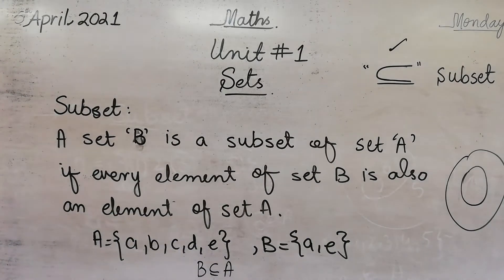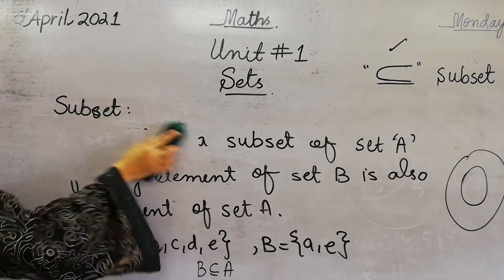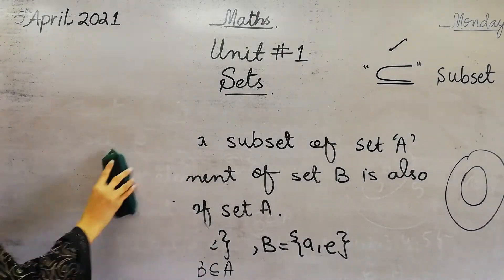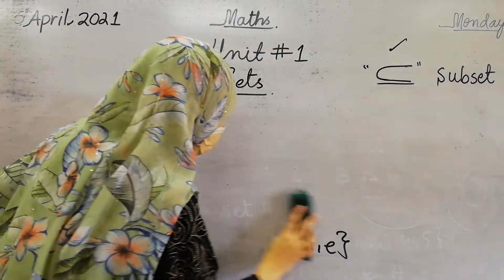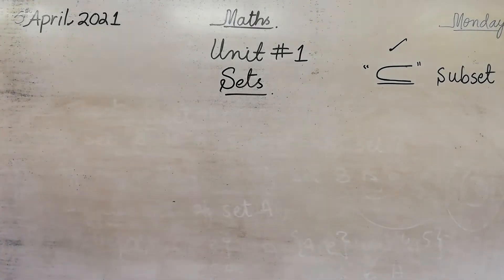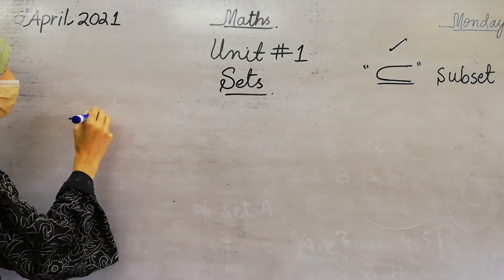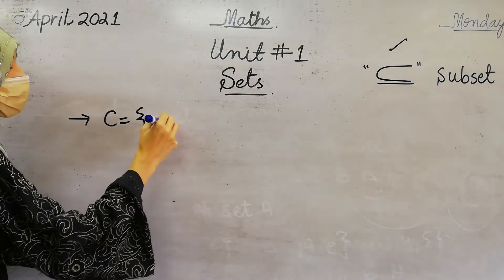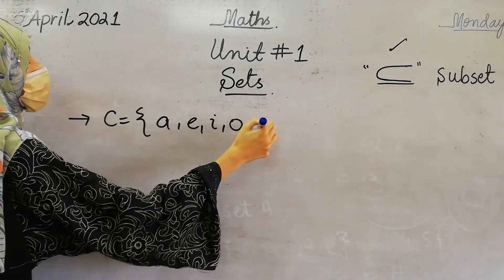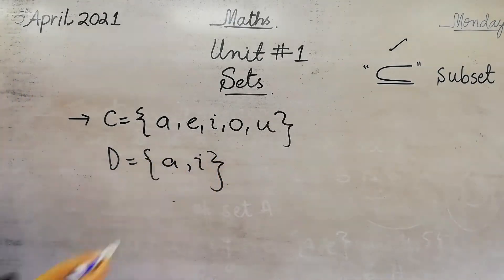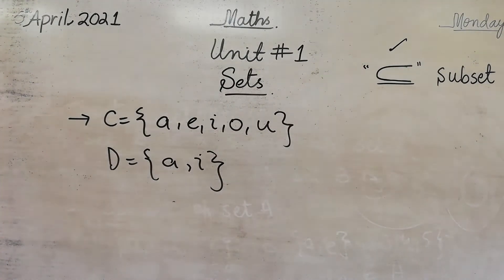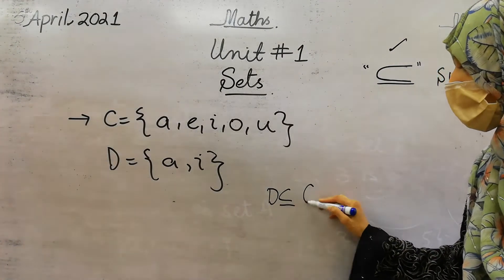There are some important points which you should note in your notebook. A set is a subset of set B if it contains all the elements. For example, let set C be {A, E, I, O, U} and set D be {A, I}. Now tell me which is the subset of set C. The subset of set C is D, so D is a subset of set C.